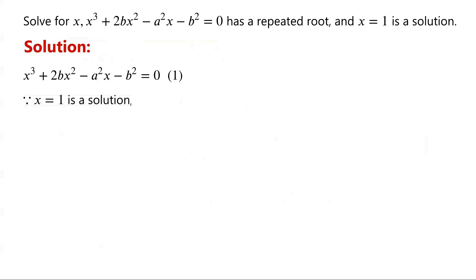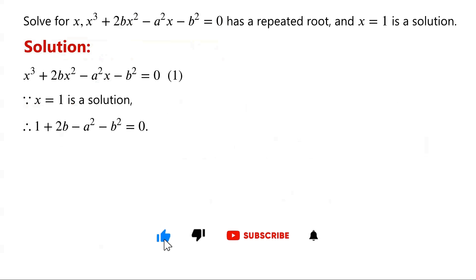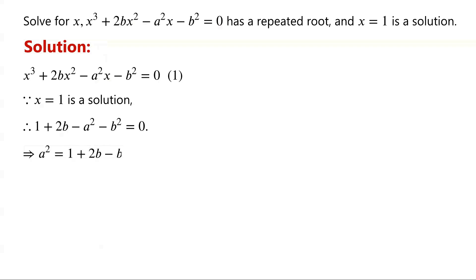Because X equals 1 is a solution, we substitute X equals 1 into equation 1. We have 1 plus 2B minus A squared minus B squared equals 0. Rearranging, we get A squared equals 1 plus 2B minus B squared.